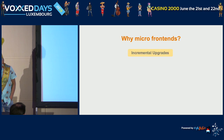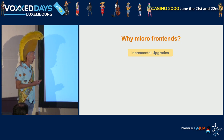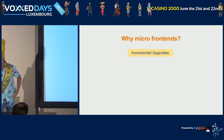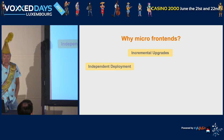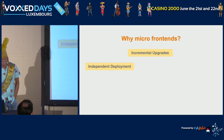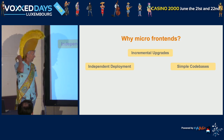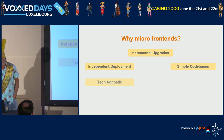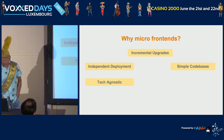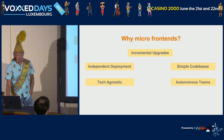Why micro frontends? Incremental upgrades — they are small, so you can deliver features very fast. Every micro frontend has its own pipeline to deploy, test, and release independently. A simple codebase is simpler to understand than a monolith. And they are tech-agnostic — you can choose your own framework. The teams work independently of each other.